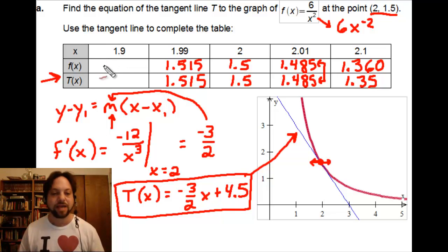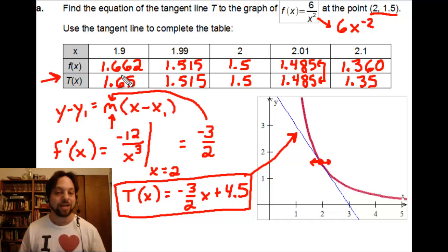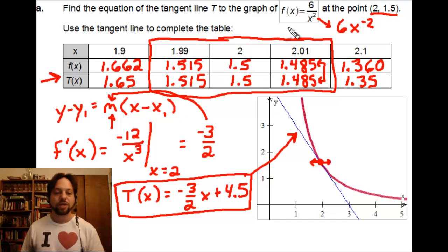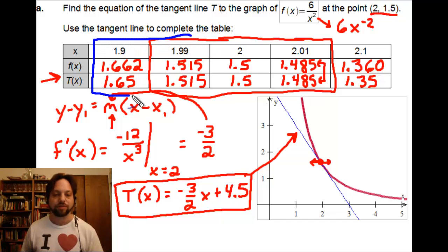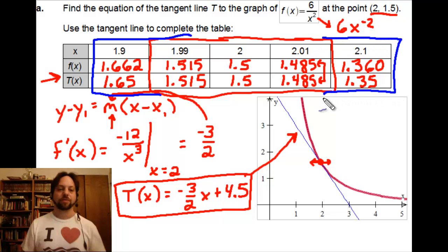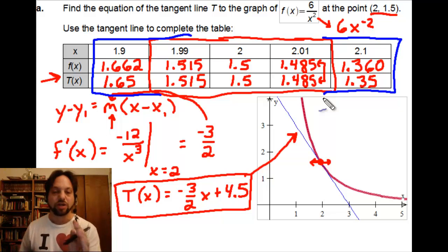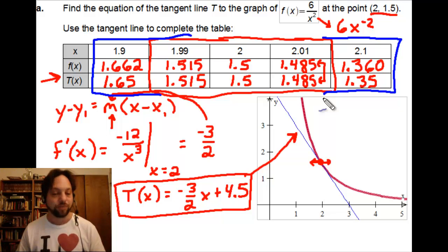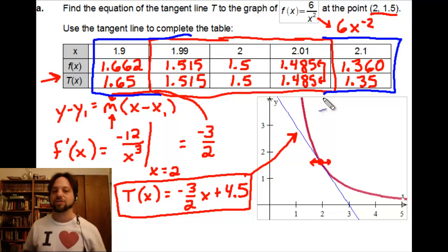At x equals 1.9, the original function has a y value of 1.662, but the tangent line gives 1.65 — they're beginning to diverge. The whole point here is that at values very, very close to the point of tangency, we can use this linear approximation and be pretty happy with our results. As we go further away, results begin to separate. We'll now generalize this by looking at the definition of a differential, since a differential is that approximation.